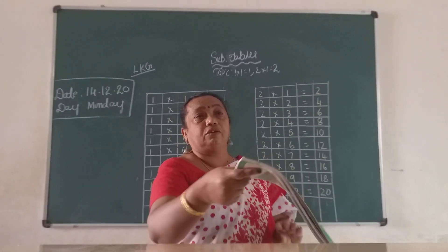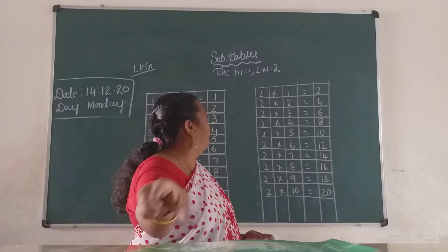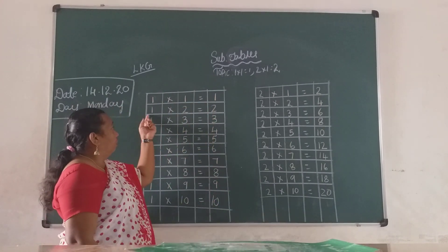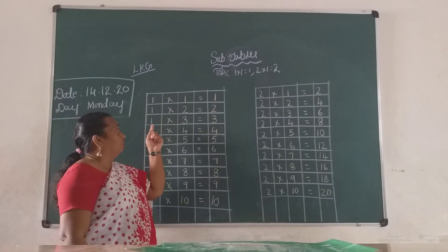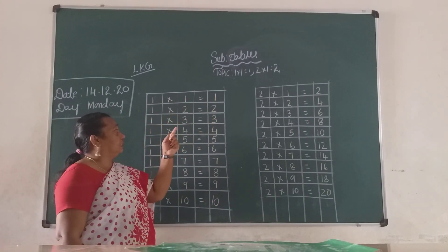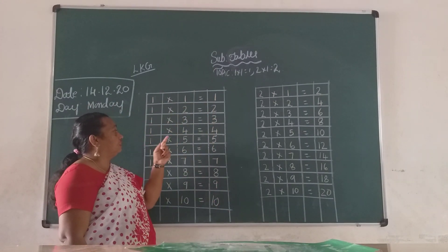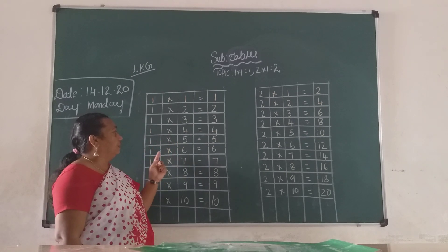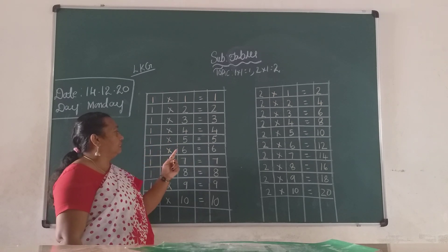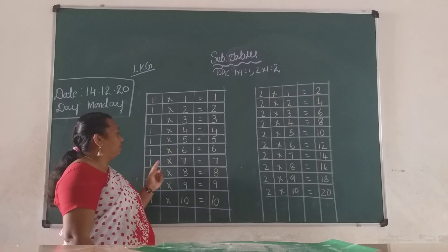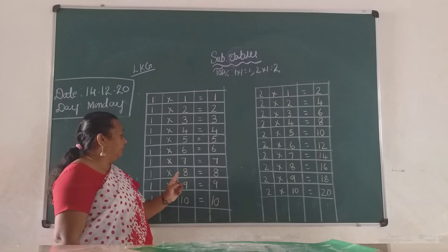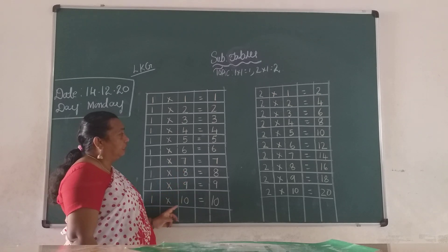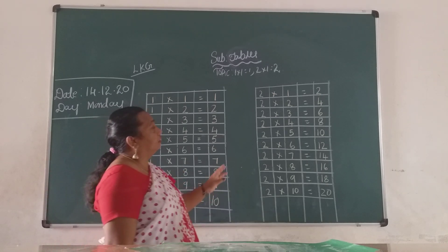Once again, what do you say? Tables. One ones are one. One twos are two. One threes are three. One fours are four. One fives are five. One sixes are six. One sevens are seven. One eights are eight. One nines are nine. One tens are ten.